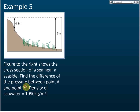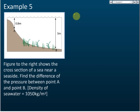What we can do is find the pressure at B and then find the pressure at A, and then use pressure at B minus pressure at A to find the difference of the pressure. So let's find the pressure at B first.